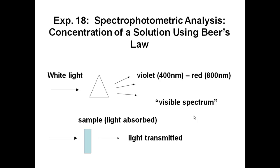When light passes through a sample of some uniform thickness — typically on instruments about a centimeter in width — part of the light is absorbed and part is transmitted. For light to be absorbed by that sample, it has to be the right frequency or wavelength. It can't just be any wavelength; it has to be a particular one for that particular species.